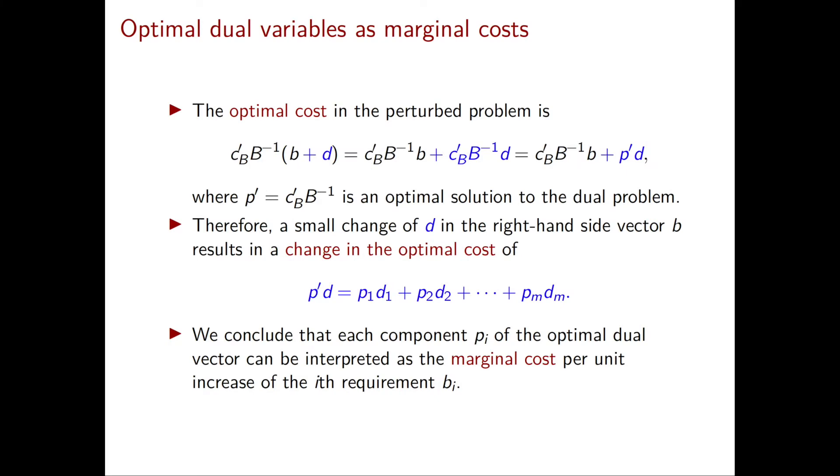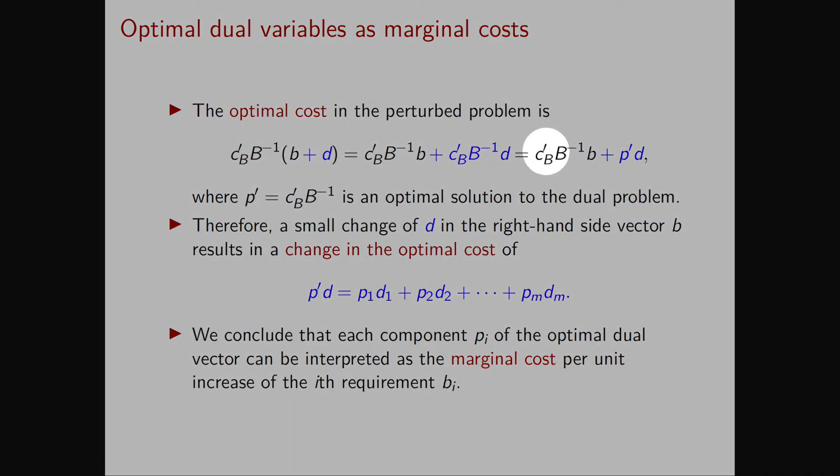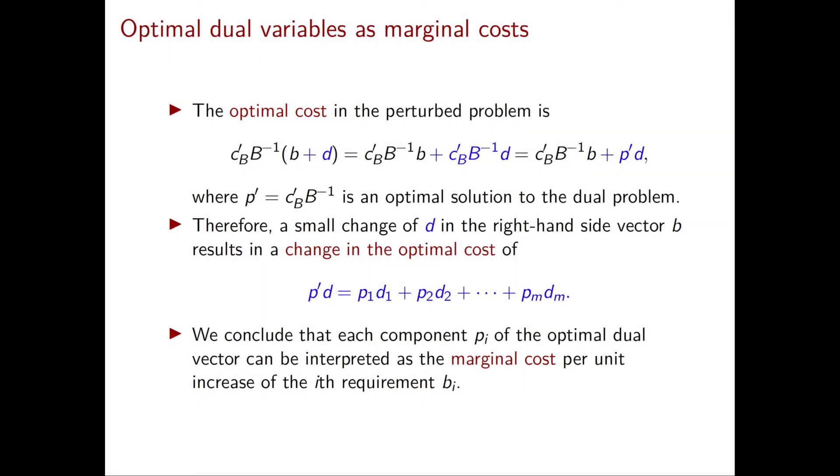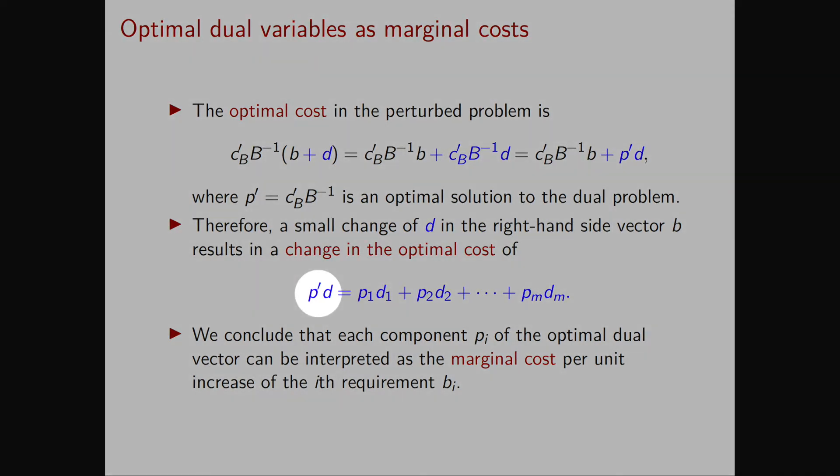So we obtain that the optimal cost in the perturbed problem is the optimal cost in the original problem plus P transpose D. So the overall change in the optimal cost from the original problem to the perturbed one is exactly P transpose D, which is P1D1 plus P2D2 and so on and so forth until PmDm.